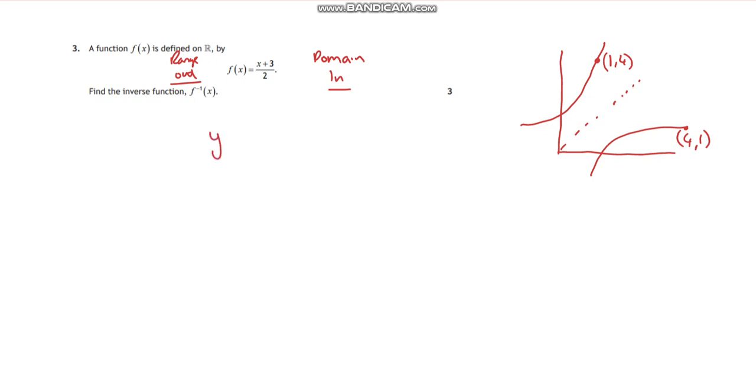So what I do is start off by saying y = (x+3)/2. I'm just going to rearrange that, so I'm going to have 2y = x+3, so then 2y - 3 = x.